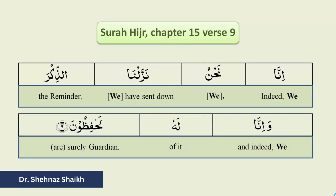Another feature of this word-for-word translation is the use of square brackets. Square brackets are used when the Arabic word's meaning is present, but for improving readability in English we do not require it. For example, in Surah Hijr, chapter 15 verse 9: 'Inna nahnu nazzalna adh-dhikra wa inna lahu' — 'Indeed We have sent down the reminder and indeed We of it' — when reading as a sentence in English, we can read: 'Indeed We have sent down the reminder and indeed We of it are surely guardians'.